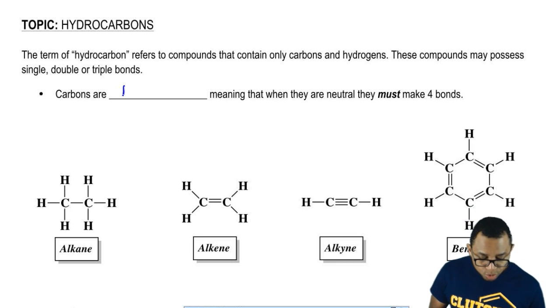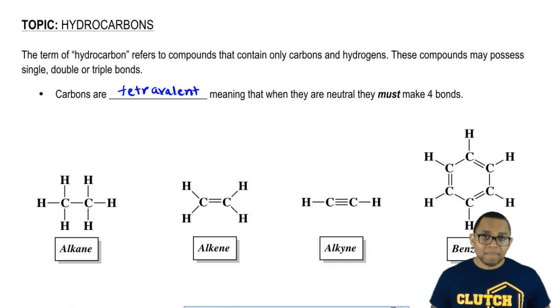Carbons are tetravalent. Remember, I've dropped this word numerous times. Carbon is tetravalent, meaning that when they are neutral, they must make four bonds. When carbon is neutral, it has to make four bonds any way that it can.